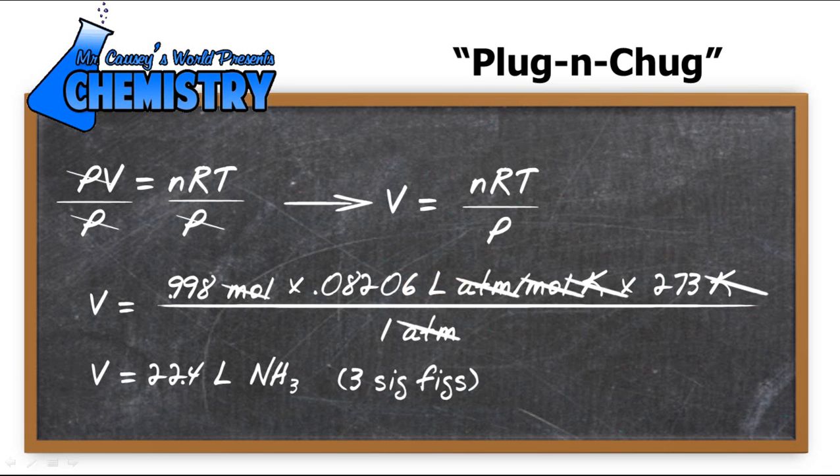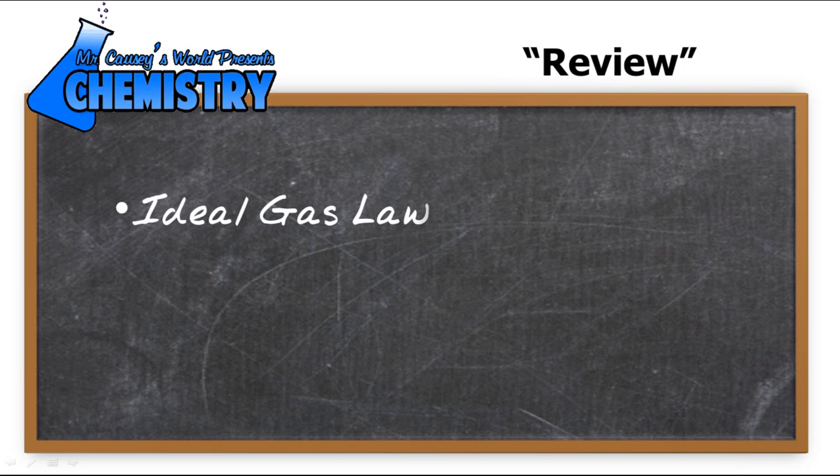Not too hard. The ideal gas law is fairly easy to use. And of course, STP, which we need to remember is standard temperature and pressure. And standard temperature and pressure is zero degrees Celsius, which is 273 Kelvin. And pressure is one atmosphere, or 760 millimeters of mercury, depending on what method you might be solving for.